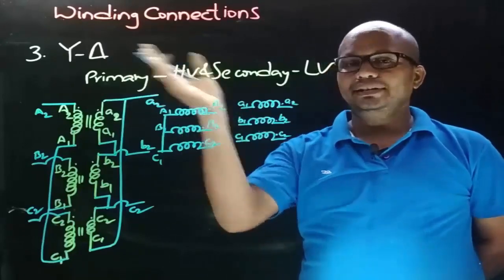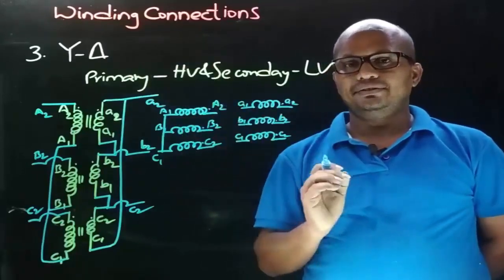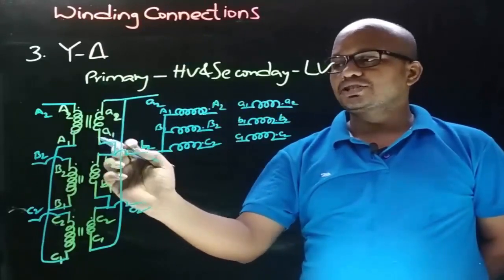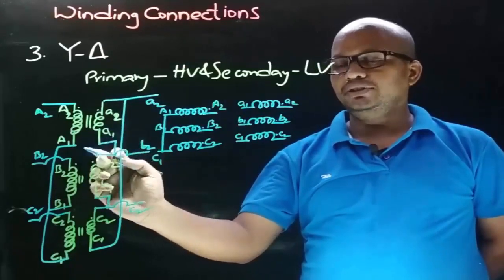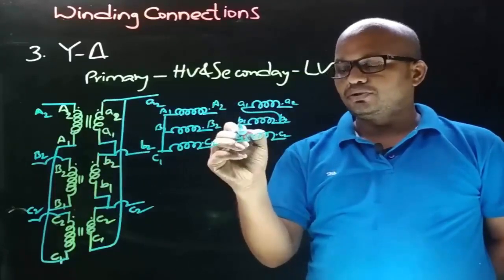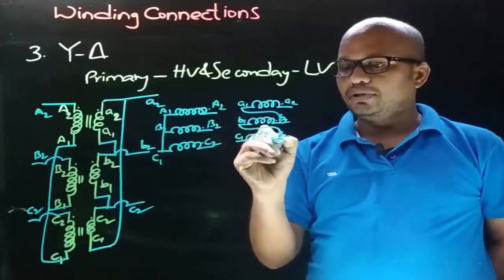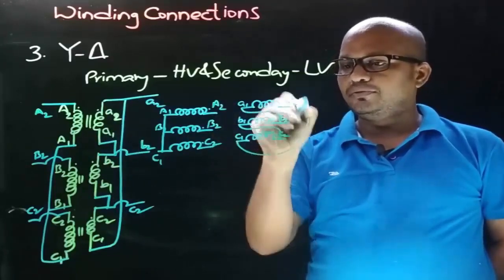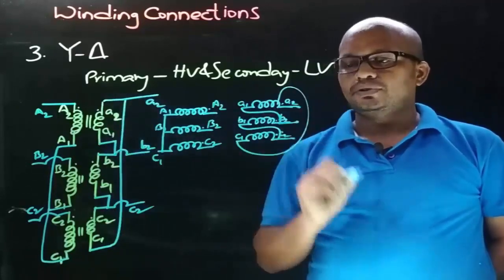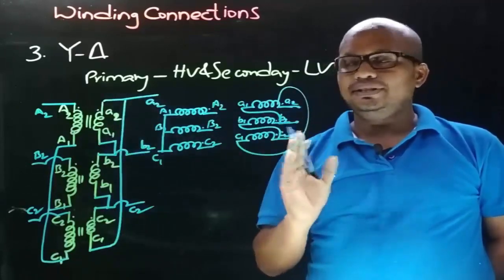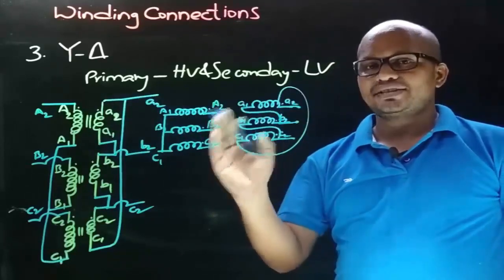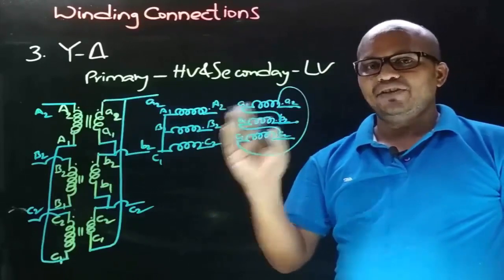Now let's obtain the delta connection on the secondary side. Observe that here we got the delta connection by joining the non-dot end terminal with the dot end terminal, and we are taking connections from the dot ends. This is how the delta connection is obtained on the secondary side. Now let's draw the phasor diagram for the primary side winding.